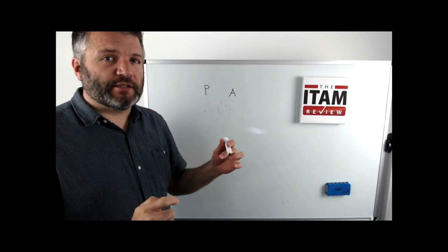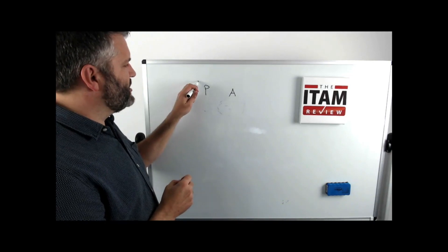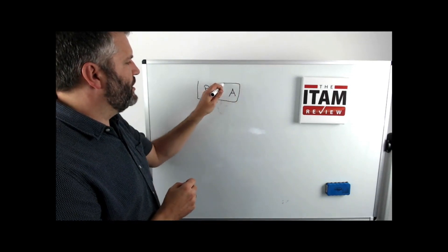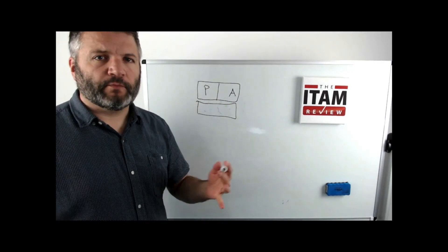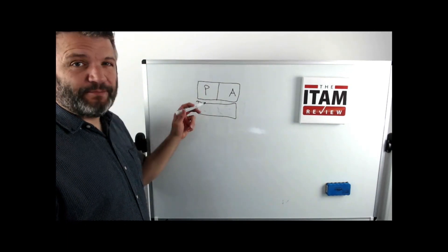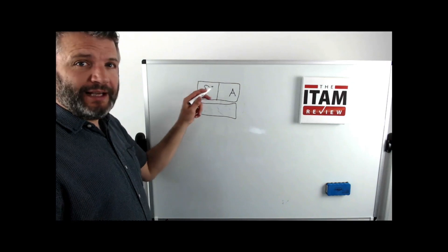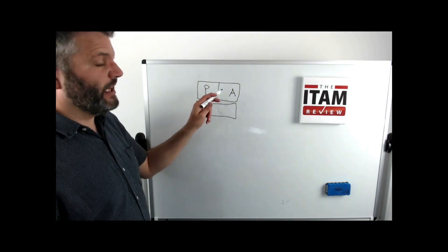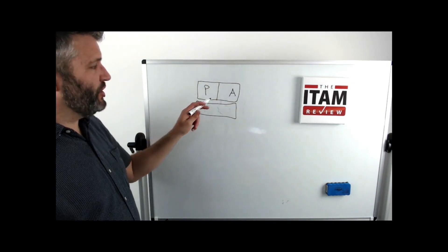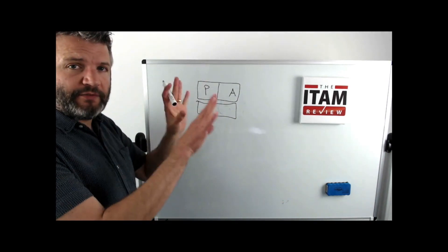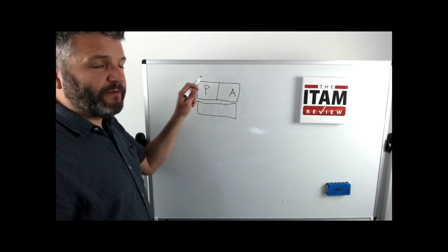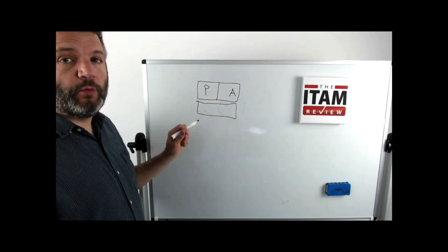What we can do is we can virtualize them. To virtualize them, you take these two systems and you put them on one big box. Now this is one system but they operate completely separately. So this might be Linux and that might be Microsoft and you can switch this one off. It can be on a different version to that one. They're completely different entities but they run virtually on top of a physical machine.